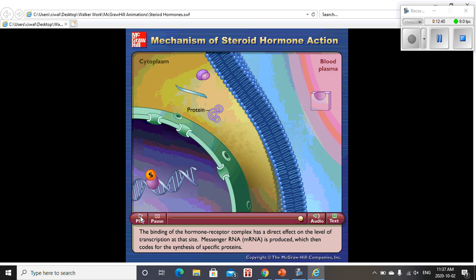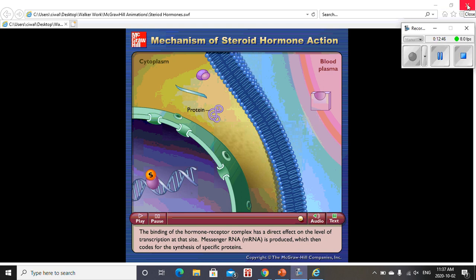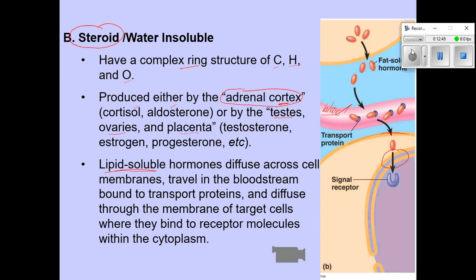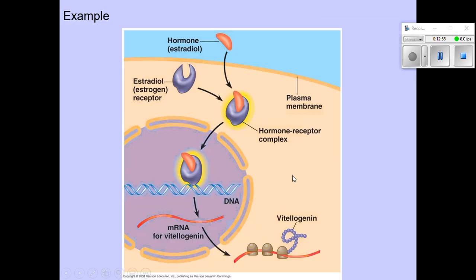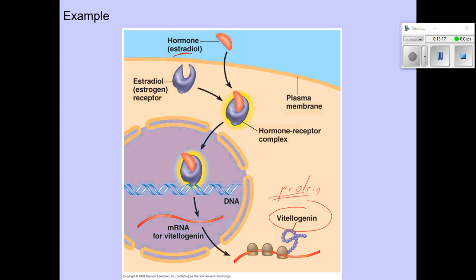Key differences: the steroid hormone does pass through the phospholipid bilayer, it enters the nucleus, and not only does it lead to activation of proteins already there, but it leads to the synthesis of entirely new proteins by that cell. The example shown is estradiol, which is estrogen — the female sex hormone. It passes through the cell membrane, binds to a receptor in the cytoplasm, enters the nucleus, and leads to the production of a new protein. This protein wasn't already present inside the cytoplasm — it was synthesized because of the stimulus coming from this hormone.